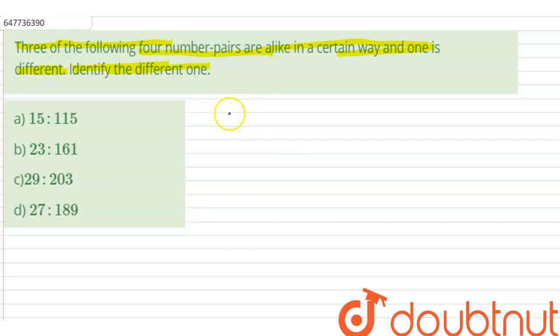We need to identify which number pair is different from these four. Let's start with option D and establish a relation between the number pairs. 27 is to 189. What is the similarity?